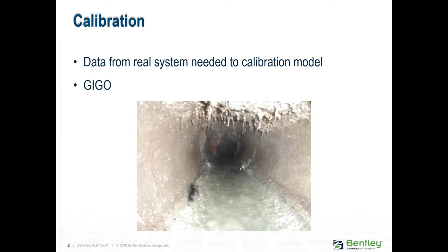For this, you need to enter data from a real system to start your calibration. There is a well-known principle — GIGO — garbage in, garbage out. That means, especially in calibration, if you calibrate a hydraulic model made for a wet weather scenario using dry weather data, it will not work well. So we need to have good information for the calibration procedure.